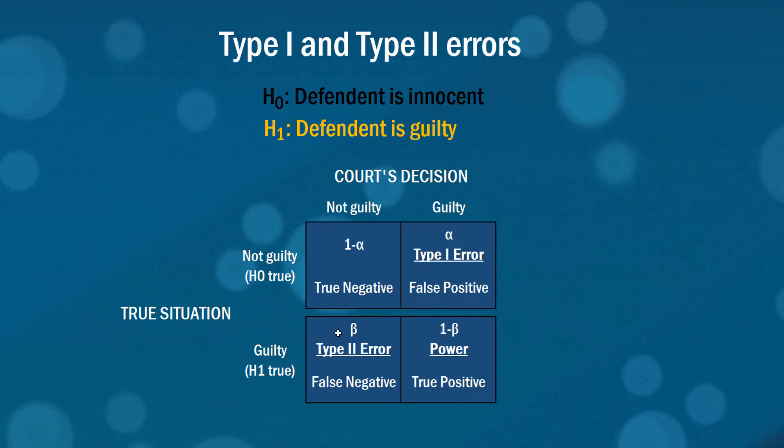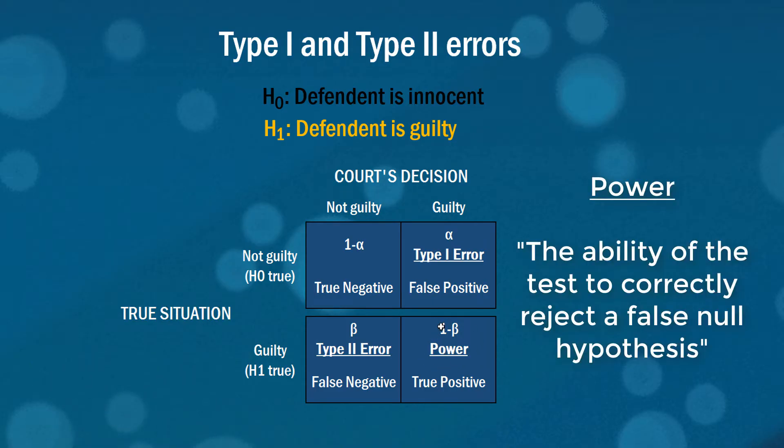A type 2 error is also given the letter beta and that's when the person was guilty but we just didn't have enough evidence to find them guilty. So we've incorrectly failed to reject the null hypothesis. We also get this thing called power which is the ability of the test to correctly reject a false null hypothesis. If the person was guilty, the power tells us how likely we are to correctly convict them.